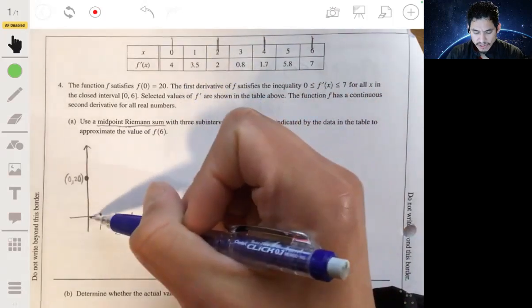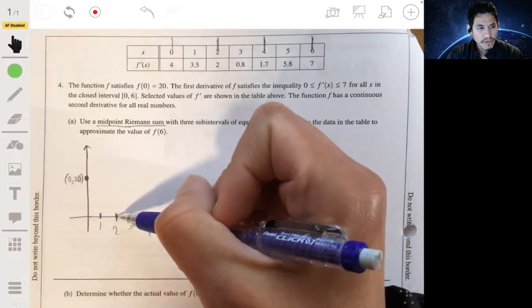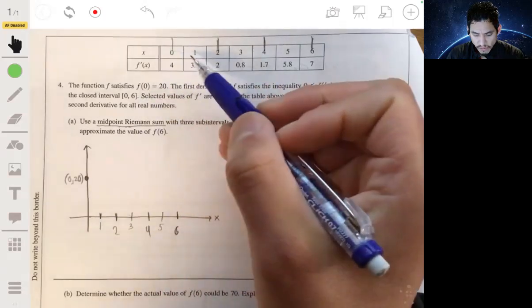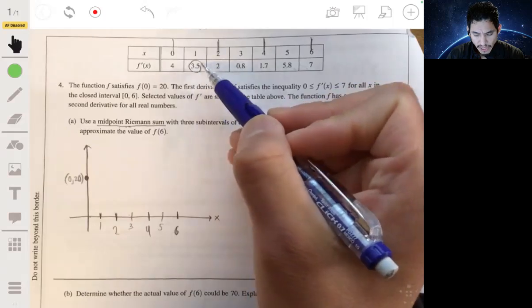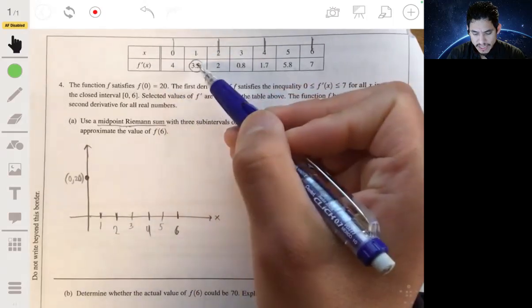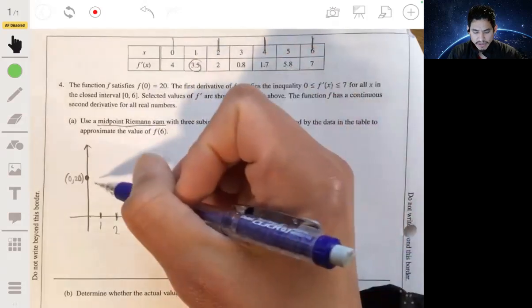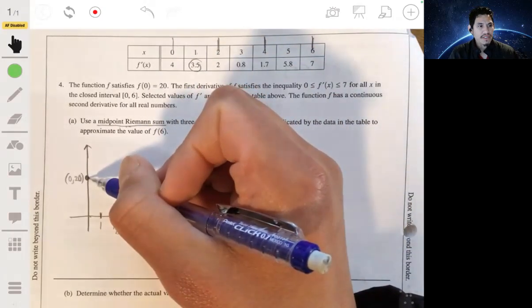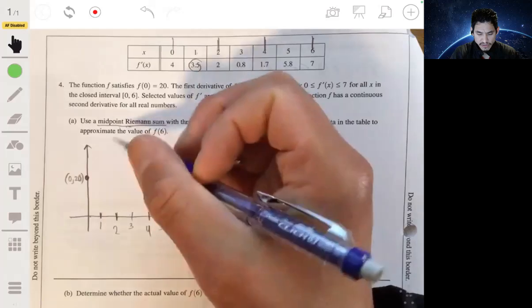So this first rectangle has a width of 2. And when we look at the derivative at 1, it says that it's 3.5. That means, on average, the value of f is going to change by 3.5 on this first interval.